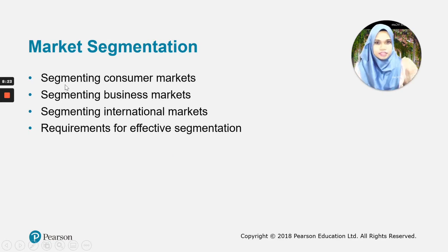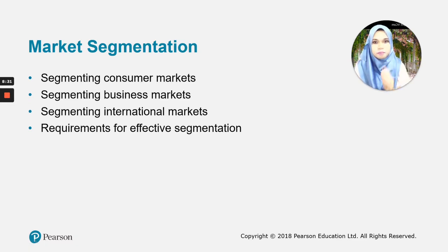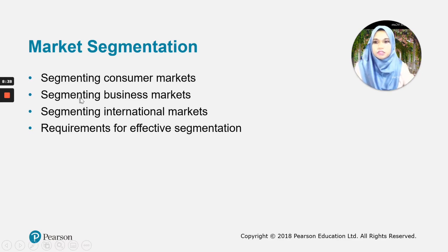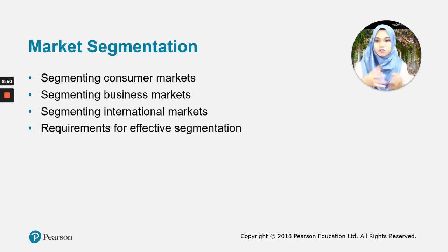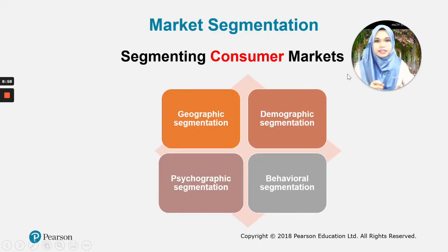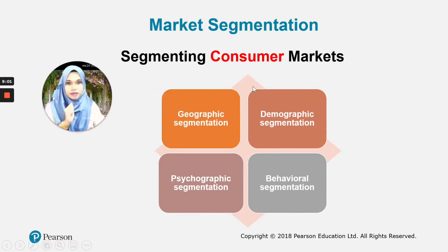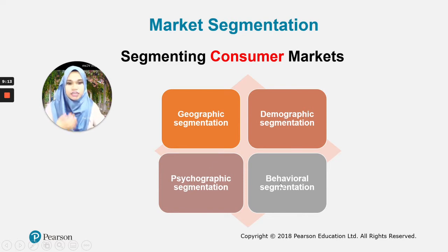In this chapter we will learn about four bases for segmenting consumer markets: geographic segmentation, demographic segmentation, psychographic segmentation, and behavioral segmentation. We will also look at segmenting business markets, segmenting international markets, and the requirements for effective segmentation. Remember that consumer markets are people buying for personal or household consumption, while business markets are businesses buying products for their operations.